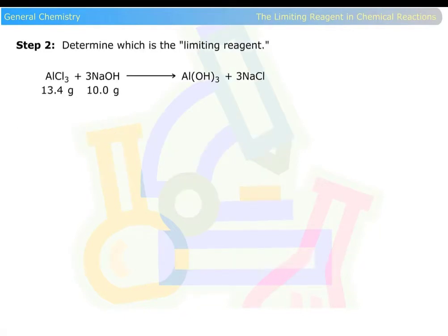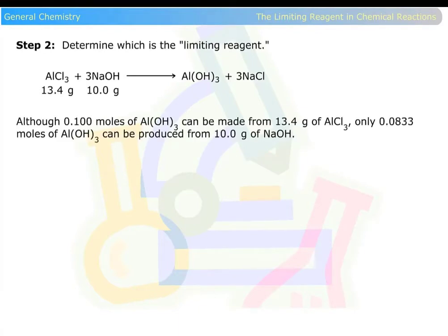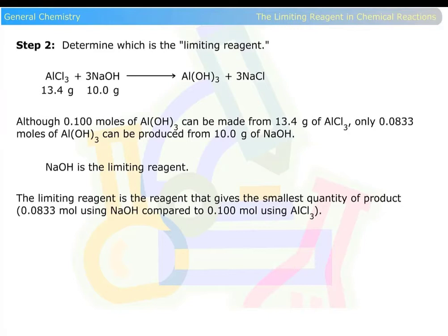Step 2: Determine which is the limiting reagent. Although 0.1 moles of aluminum hydroxide can be made from 13.4 grams of aluminum chloride, only 0.0833 moles of aluminum hydroxide can be produced from 10 grams of sodium hydroxide. Sodium hydroxide is the limiting reagent — the reagent that gives the smallest quantity of product.